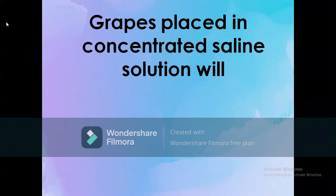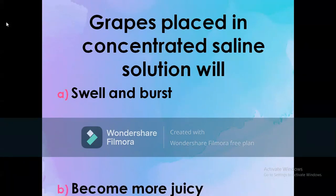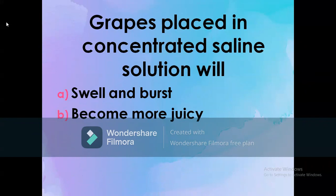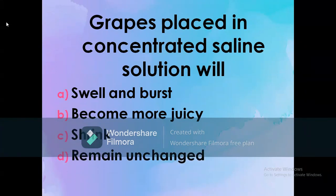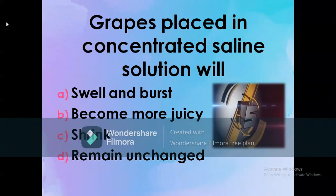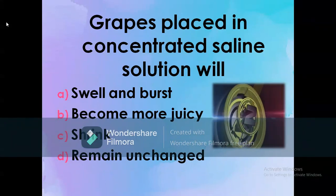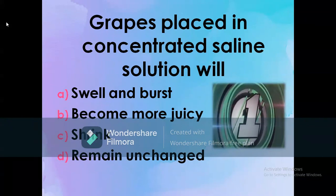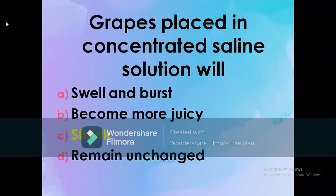Grapes placed in concentrated saline solution will: A) Swell and burst, B) Become more juicy, C) Shrink, D) Remain unchanged. The correct option is C: Shrink. Grapes placed in concentrated saline solution will shrink.